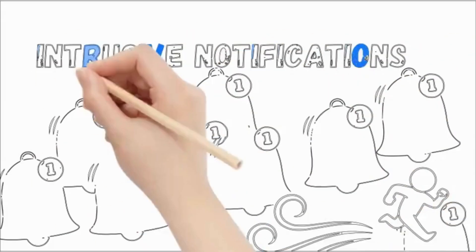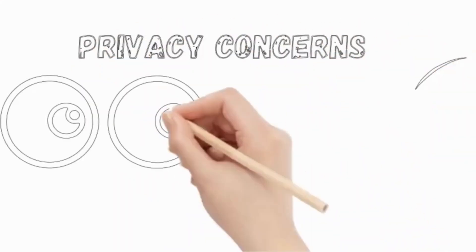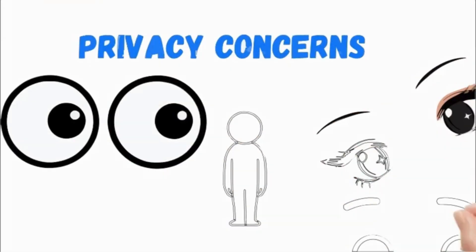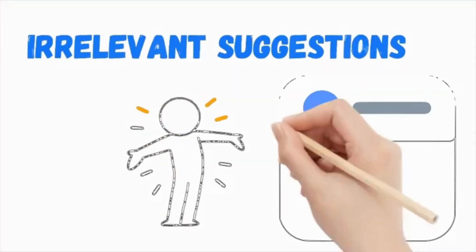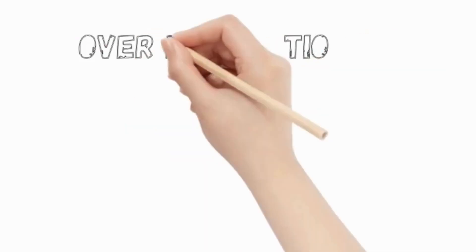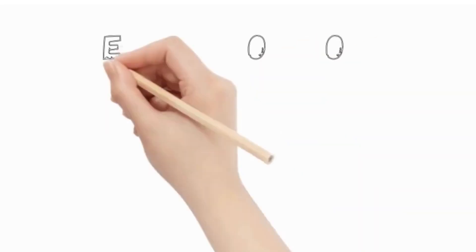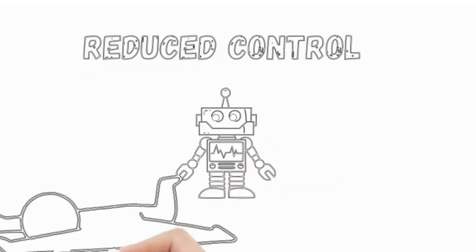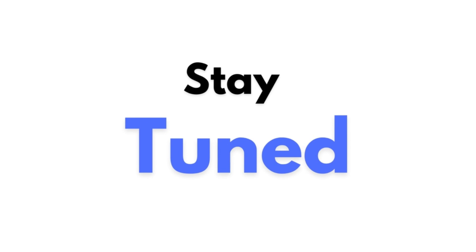If you had intrusive notifications, privacy concerns, irrelevant suggestions, automated interactions, over-moderation, and feel like you have reduced control over your Facebook feed, then stay tuned. I'm going to show you how to turn off those Meta AI notifications.